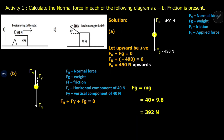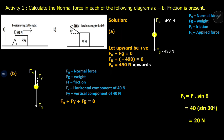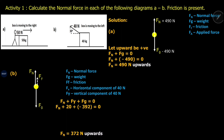The 392 Newtons is negative. Fy equals F sin theta — that's 40 sin 30 equals 20 Newtons — so this 20 Newtons will be upward, a positive force. Feeding these two forces into the equation and simplifying gives us Fn equals 372 Newtons upward.